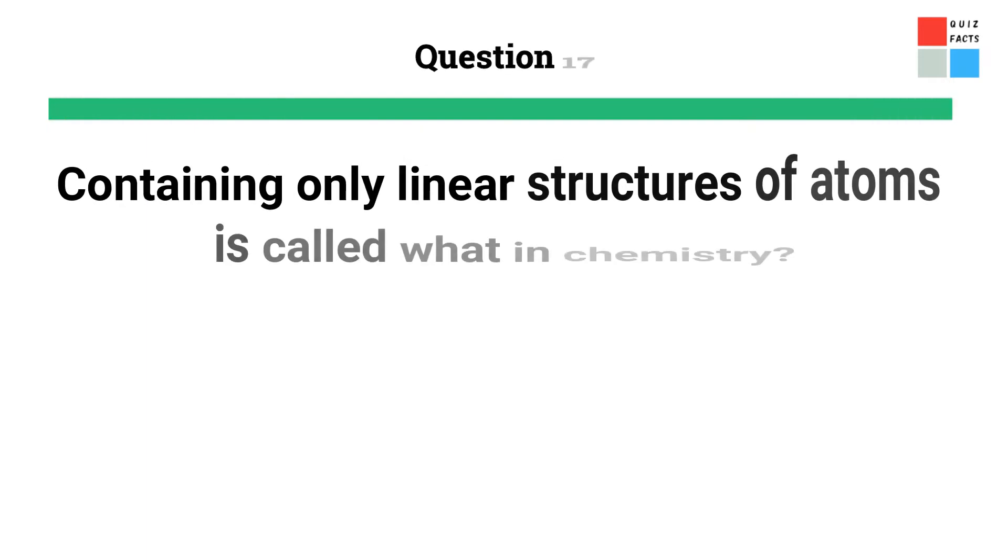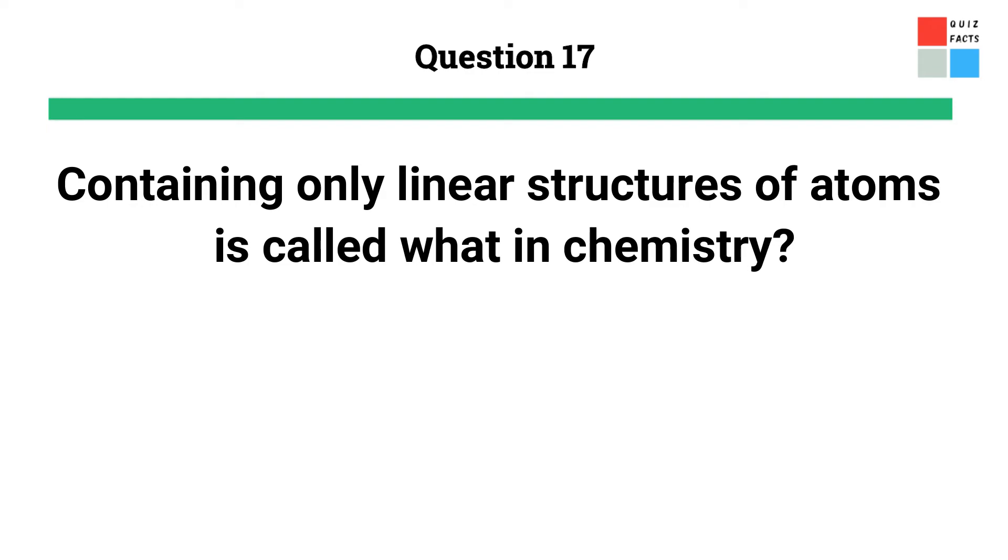Containing only linear structures of atoms is called what in chemistry? Answer: Acyclic.